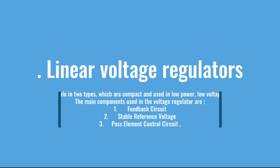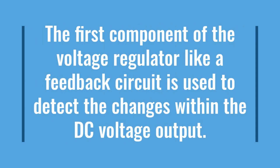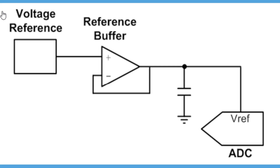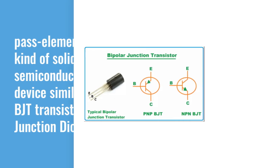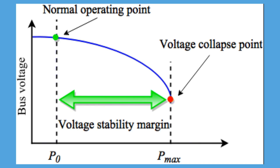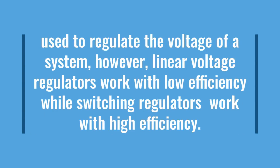The linear voltage regulator is the easiest type. It is available in two types, which are compact and used in low power, low voltage systems. The main components used are: 1. Feedback circuit. 2. Stable reference voltage. 3. Pass element control circuit. The feedback circuit detects changes within the DC voltage output. Based on the reference voltage and feedback, a control signal is generated and drives the pass element to compensate the changes. The pass element is a solid-state semiconductor device similar to a BJT transistor, PN junction diode, or MOSFET. The DC output voltage is thus maintained approximately stable.